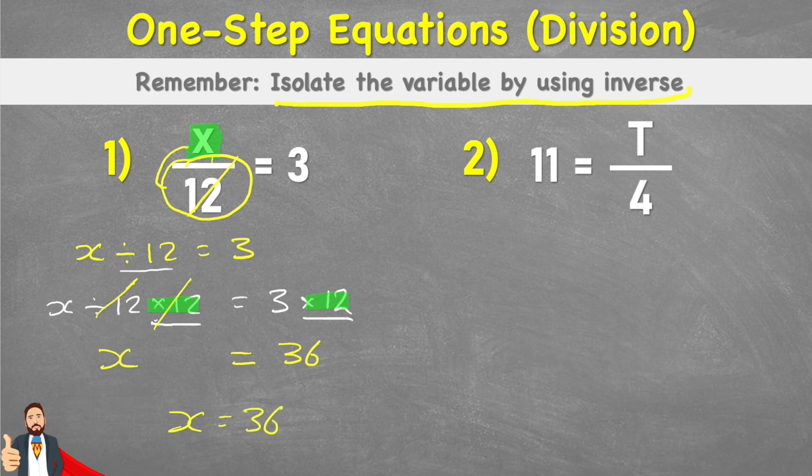But that's not the only method that we can use. We can use the method of looking at the number families. So at the moment, if we look at this second question, it says 11 equals t divided by 4. Or in other words, t divided by 4 equals 11. Same thing.